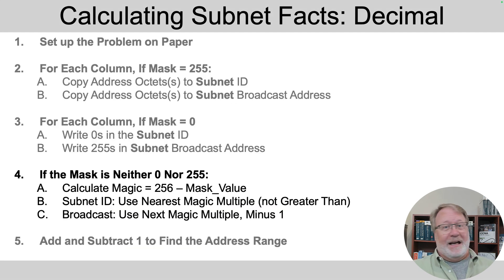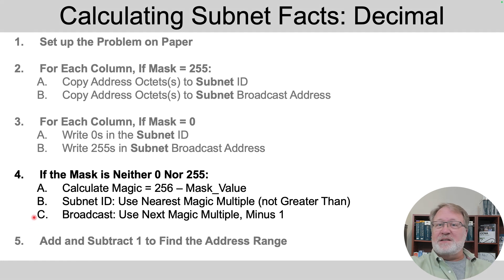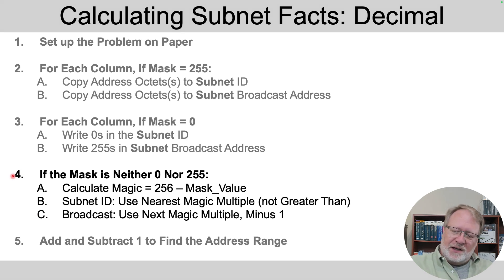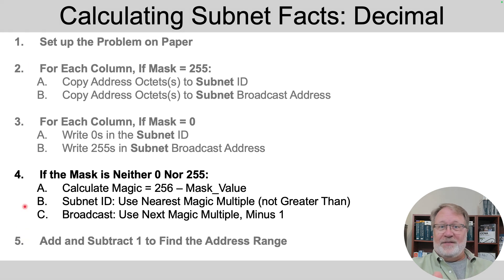So here's the process — I'm not going to read it to you, I'm going to show it to you with three examples. Steps one, two, three, and five deal with the easy octets — that's either three or four octets depending on the mask. The difficult or interesting octet is handled in step four with three sub-steps. We'll spend a lot of time there, but we still have to get through the simpler steps one, two, three, and five.